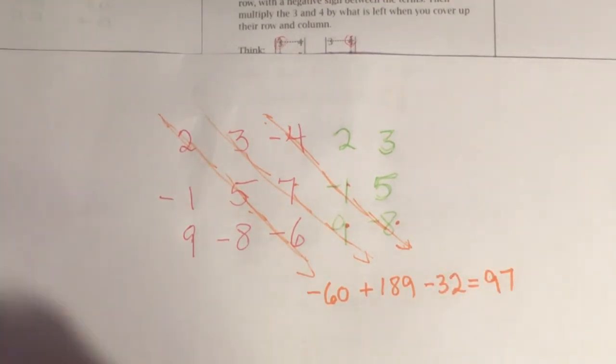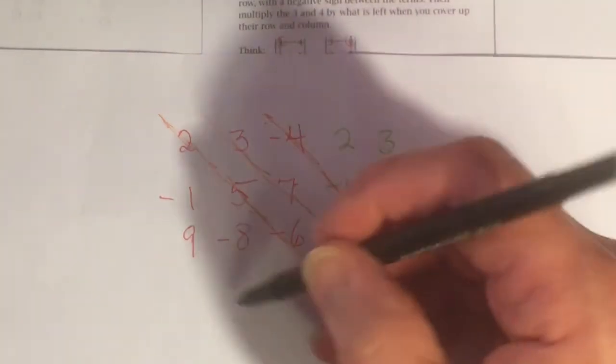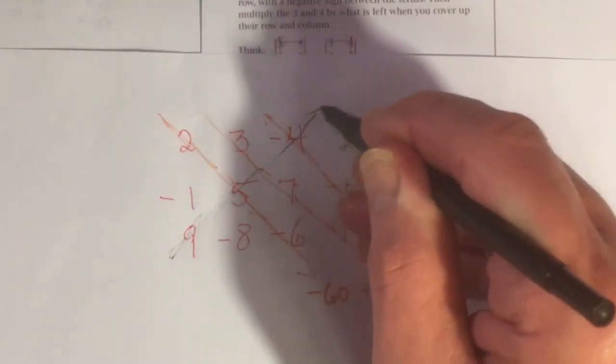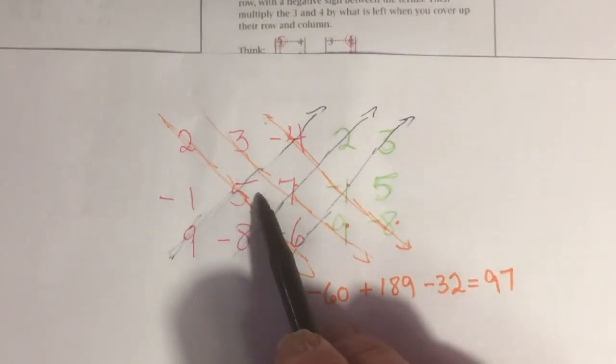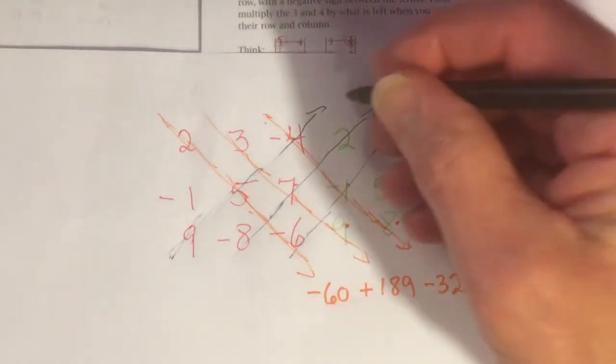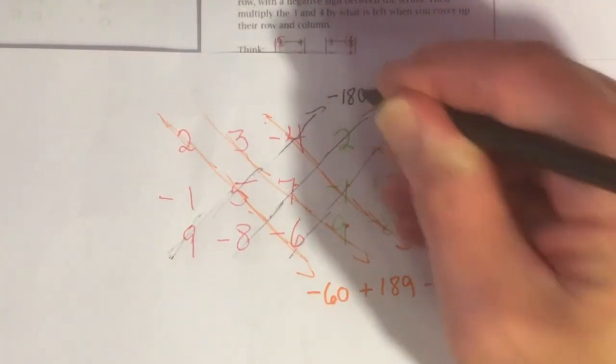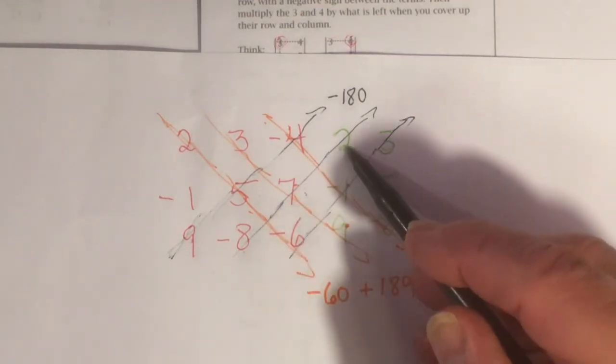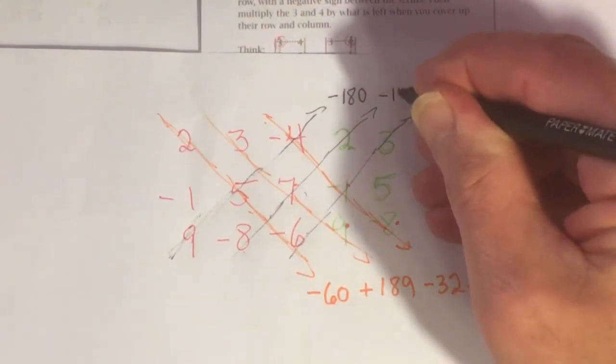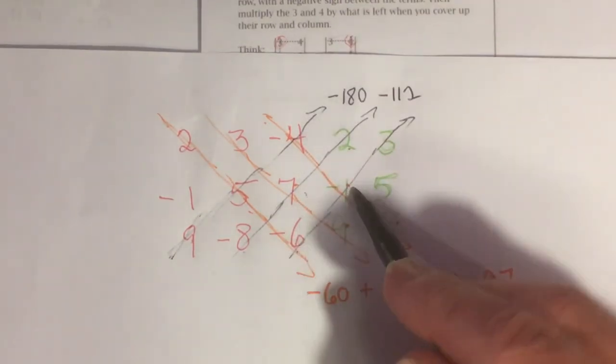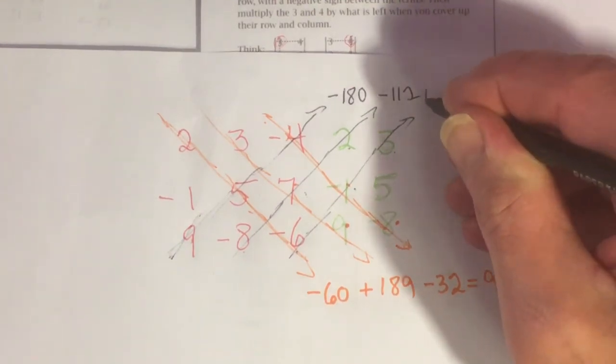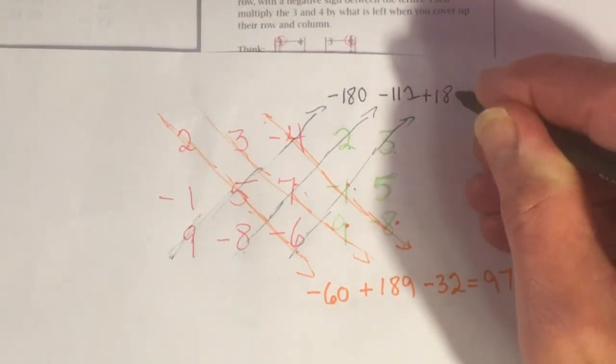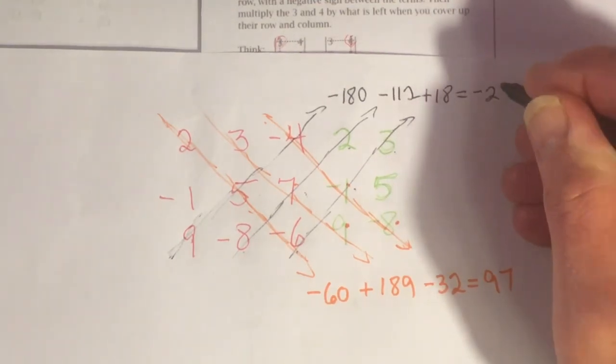Now, if I go the other way, in other words, instead of going down, I go up diagonally. This way, and this way, and this way. 9 times 5 times negative 4 is negative 180. And then negative 8 times 7 times 2 is negative 112. And negative 6 times negative 1 times 3 is 18. And if I add those together, I get negative 274.